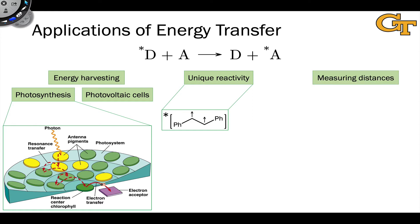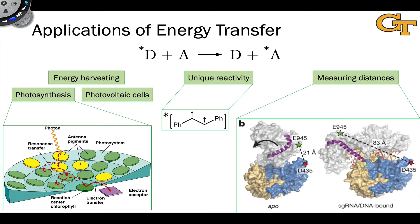A third application, which will come into focus as we progress, is measuring distances. Energy transfer has a profound distance dependence, and in particular one of the mechanisms we'll discuss can be felt over very large distances and is highly sensitive to changes in distance. This can be used to measure the distances between two chromophores inside a system — commonly applied in biochemistry to look at distances inside proteins. For example, a protein undergoing a conformational change can be observed through a change in the extent of energy transfer between two chromophores, E945 and D435.